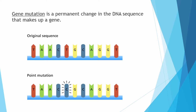Gene mutation is a permanent change in the DNA sequence that makes up an organism. In this figure, this is the original sequence of our DNA. We have the arrangement: thymine, adenine, adenine, cytosine, and thymine. In this point here, we have the point mutation, and instead of thymine, we have cytosine.